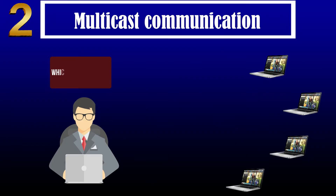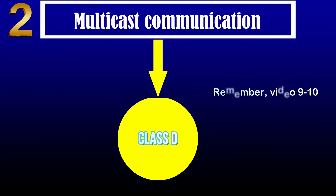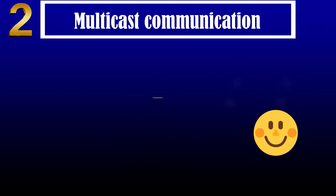When a single device wants to communicate with a group, it must use a specific type of IP address in order to achieve it. We must use only class D IP addresses in multicast communication.